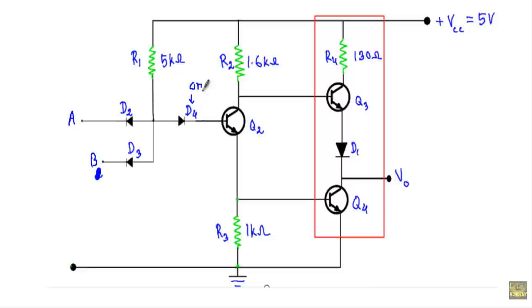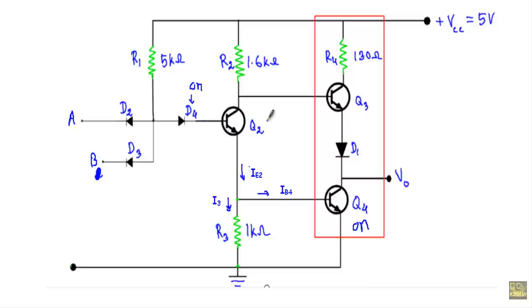When transistor Q2 is in ON state, it supplies emitter current IE2. That emitter current IE2 divides into two parts: one current I3 flows through resistor R3, and the other current IB4 flows to the base of transistor Q4. The I3 current causes a voltage drop of I3·R3 which keeps transistor Q4 in ON state. When Q2 is ON, its emitter current supplies sufficient voltage at the base terminal of Q4 to keep it ON. If I denote this terminal as X, the voltage at this point is Vx.